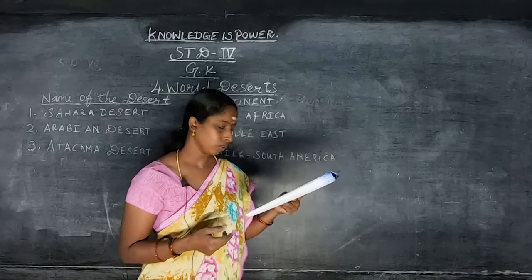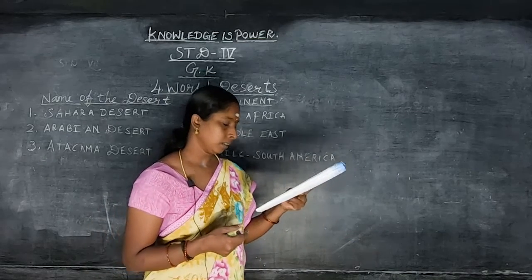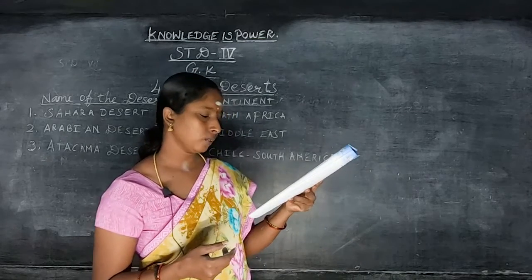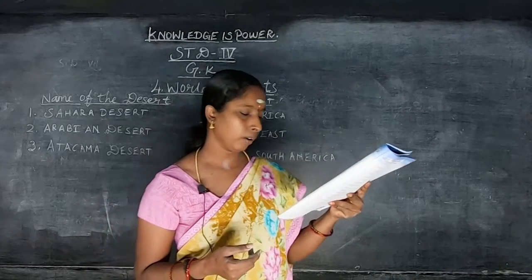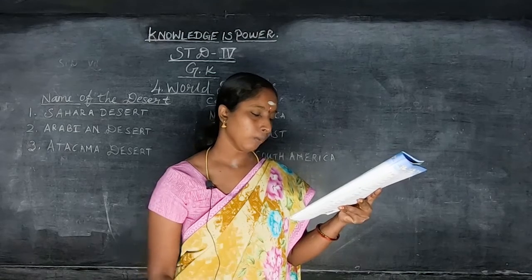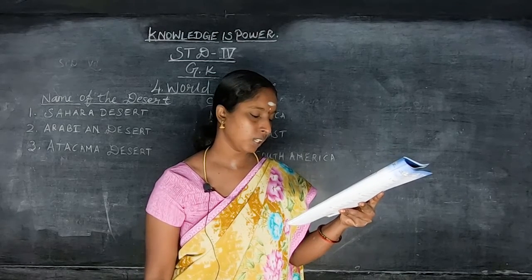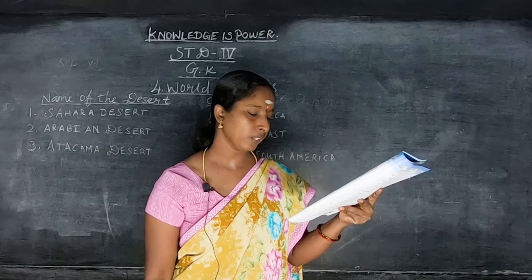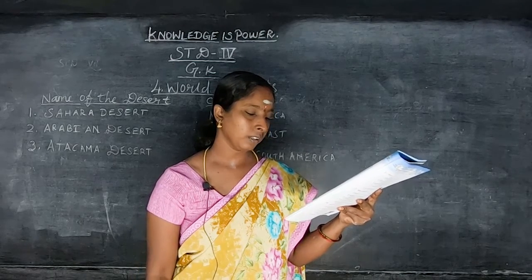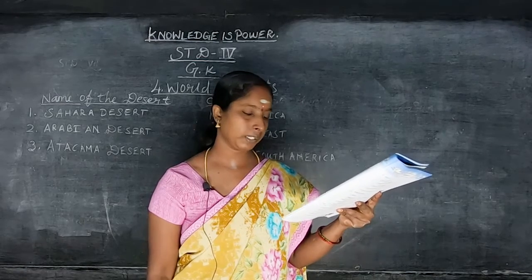Do you know? The driest place in the world is the Atacama Desert, Chile. Average rainfall: 3 centimeters.